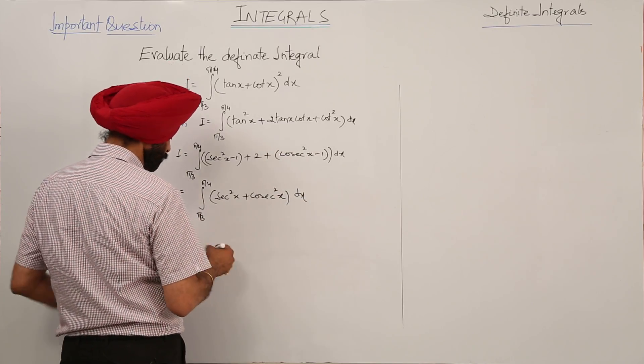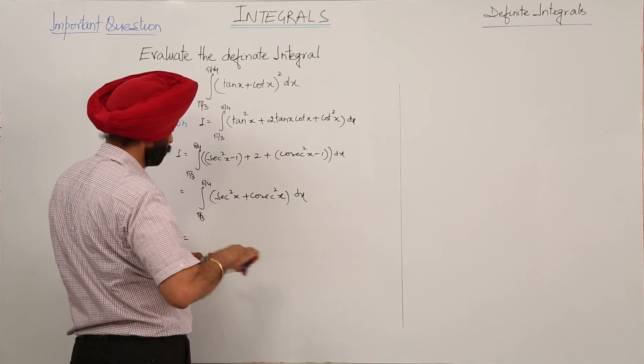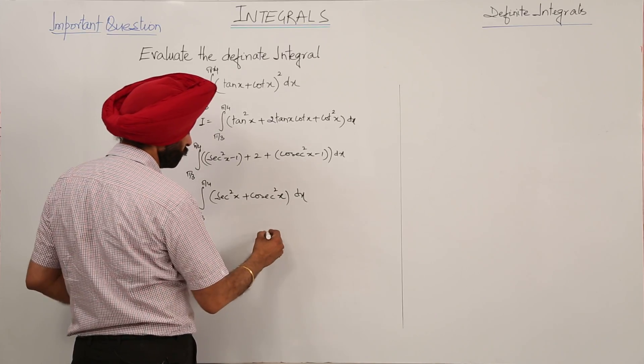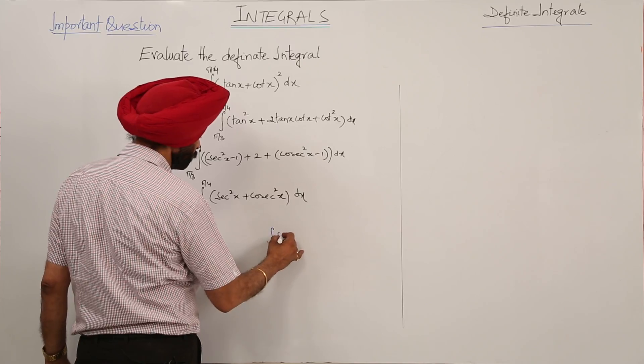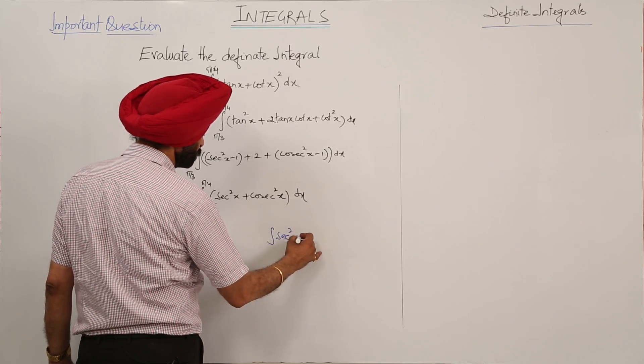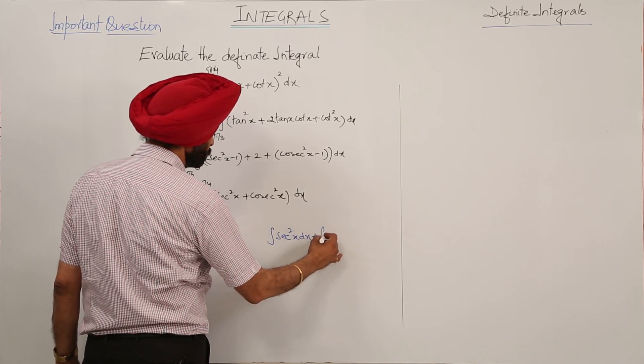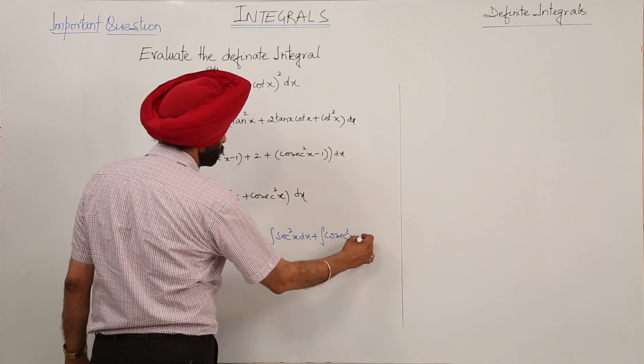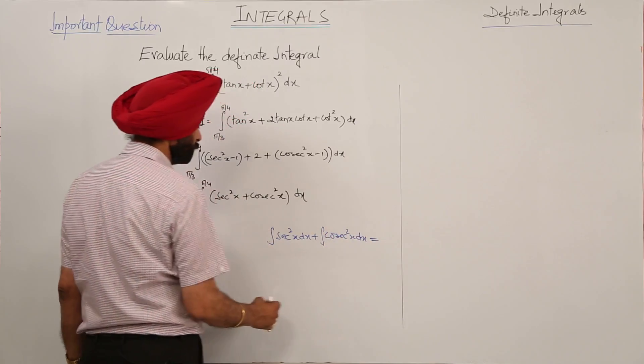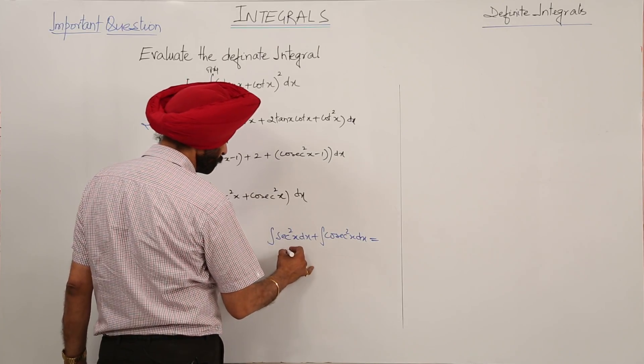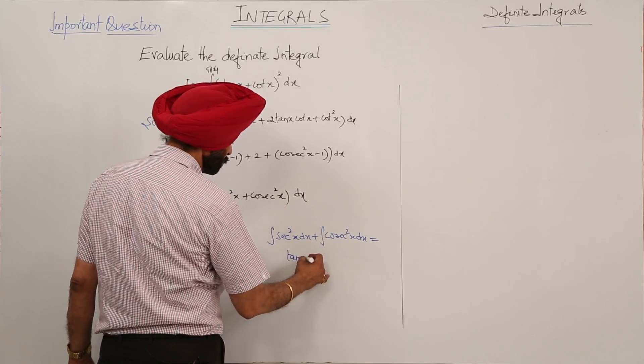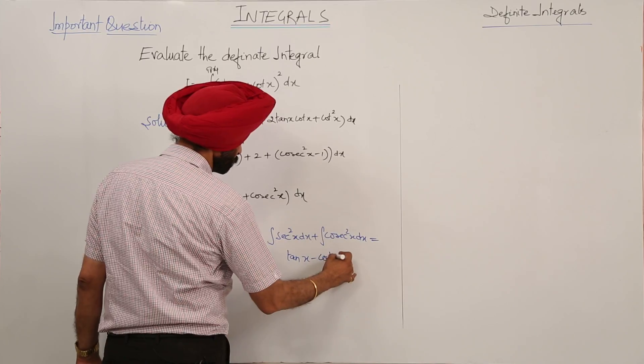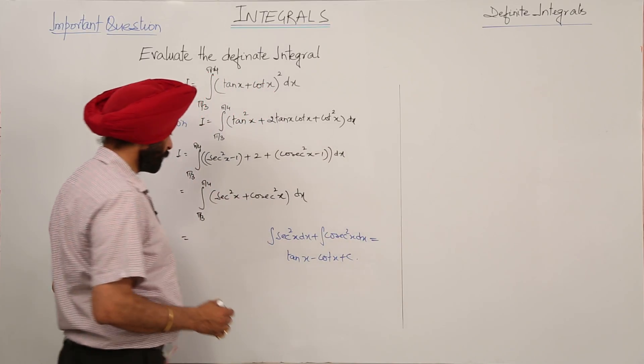Now, we have integration of sec square x dx plus integration of cosecant square x dx, which equals tan x minus cot x plus c.